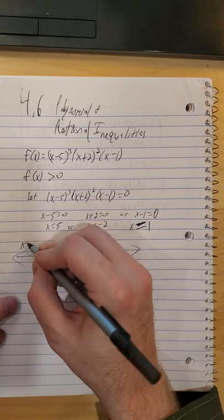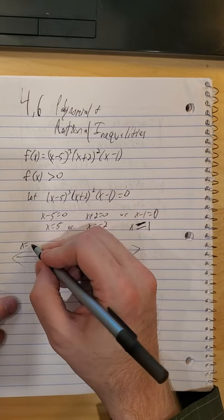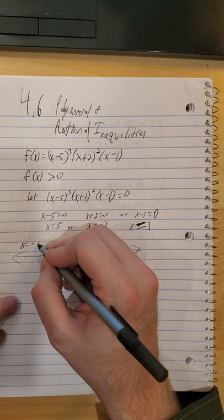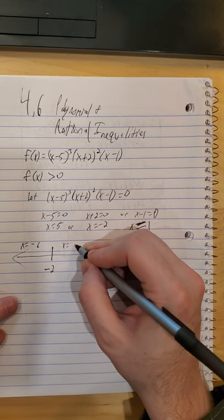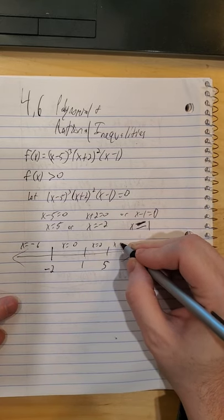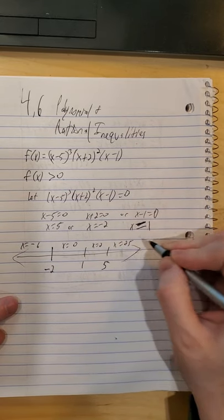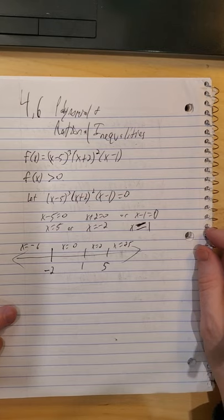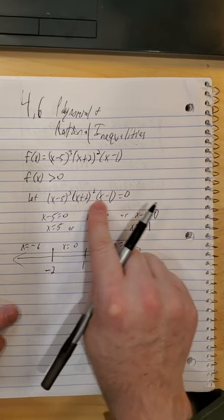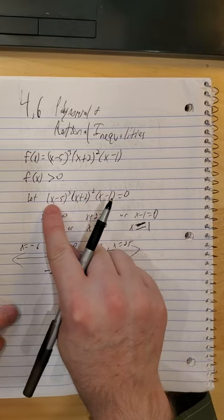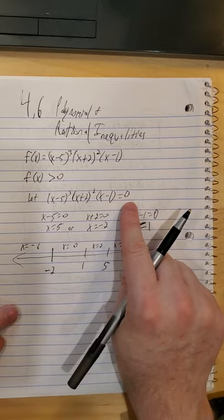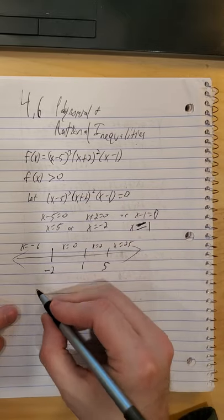So we just line up our points in order. So we'll test out maybe a negative 6, a 0, a 2, and 25. Now the nice thing is if we're in a product and quotient format, all multiplying and dividing on one side with 0 on the other, we don't actually need the numbers, just the signs.